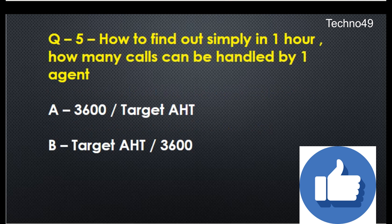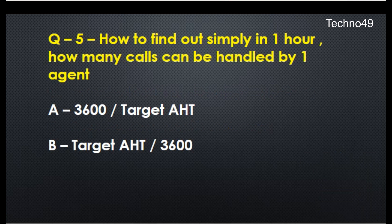The fifth and last question: how do you find out simply, in one hour, how many calls can be handled by one agent? A: 3600 divided by target AHT, or B: target AHT divided by 3600. Please pause the video and mention the correct answers in the comment section.